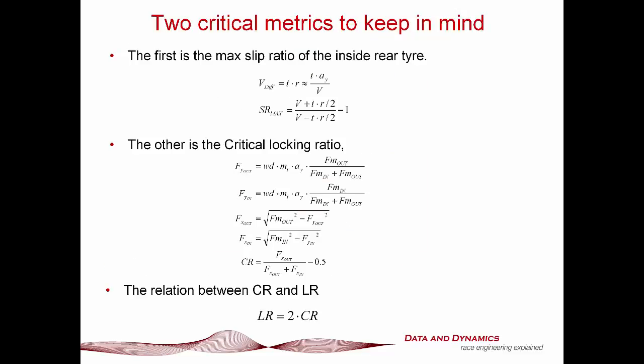The other thing is the critical locking ratio. Now, the critical locking ratio determines what your torque distribution, what your force distribution is dictated to by the traction circle radius versus load characteristics of the tire and what the traction circle ellipse is doing. Now, as a rough rule of thumb, the critical ratio is the outside longitudinal force divided by the outside longitudinal force plus the inside longitudinal force minus 0.5 and the locking ratio is two times the critical ratio.